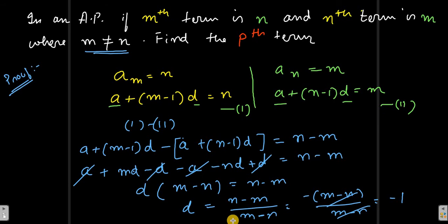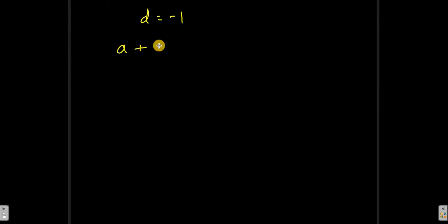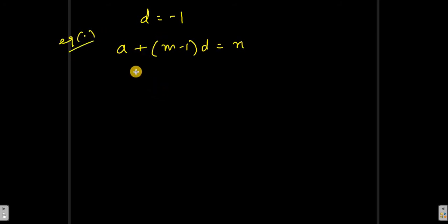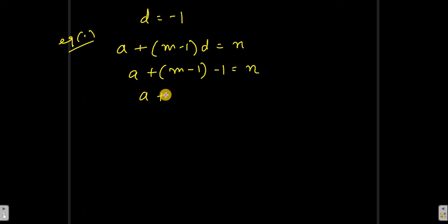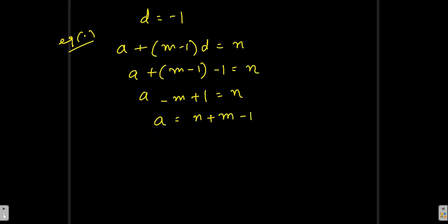Now we can substitute d equals minus one into equation one: a plus (m minus 1) into d equals n. So a plus (m minus 1)(minus 1) equals n, which gives a minus m plus 1 equals n, and therefore a equals n plus m minus 1.